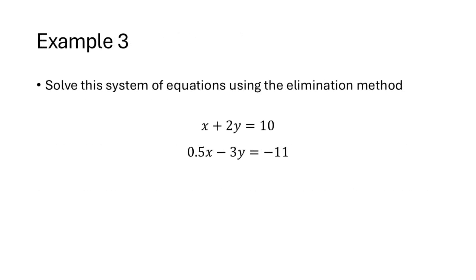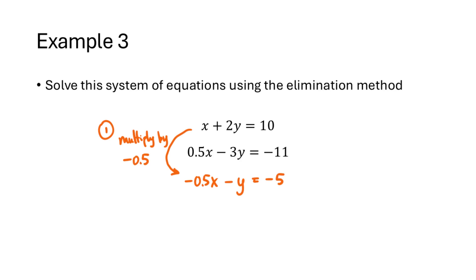Let's take a look at the same system and this time use the elimination method. Our first step could be to multiply the first equation by negative 0.5 — that is, to multiply both sides by negative 0.5. That gives us a new equation: negative 0.5x minus y equals negative 5. Now, if we add together the original second equation and this new equation, the x's will cancel out, and we'll get negative 4y equals negative 16.